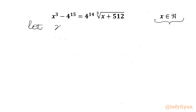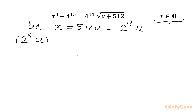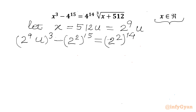I will consider x equal to 512 times u. Now 512 is 2 power 9 times u. So our equation will become 2 power 9 times u, whole cube. This is x cube minus 4 raised to the power 15, so 4 we can write as 2 square whole power 15. Then 4 power 14 we will write as 2 square whole power 14 times cube root of 512u plus 512.